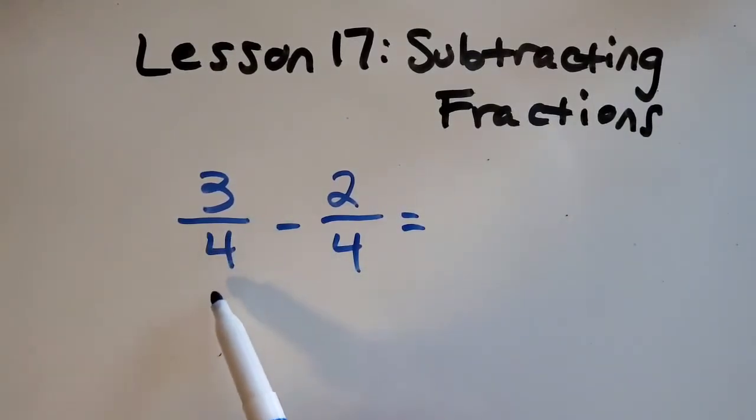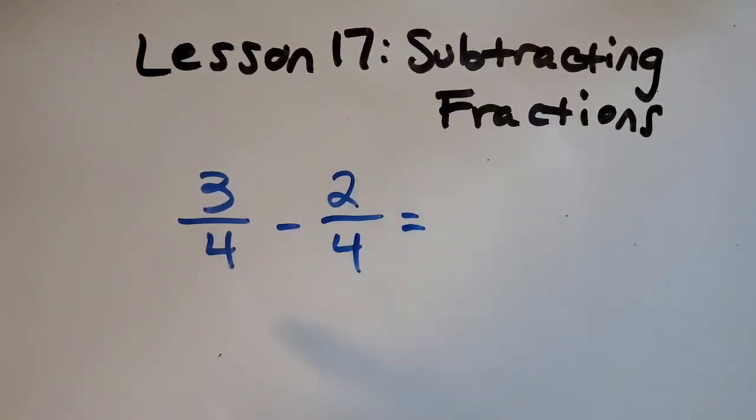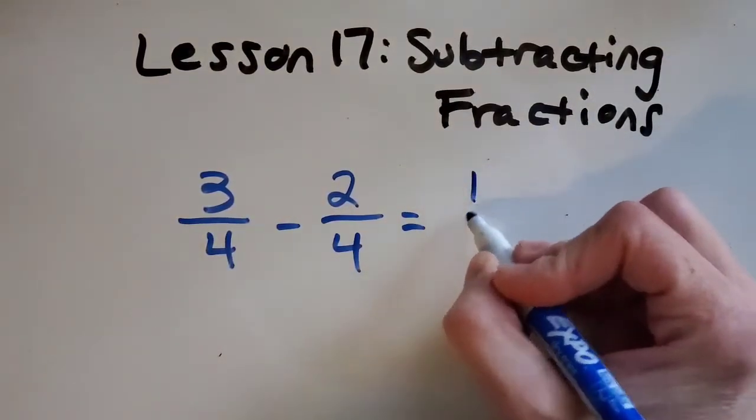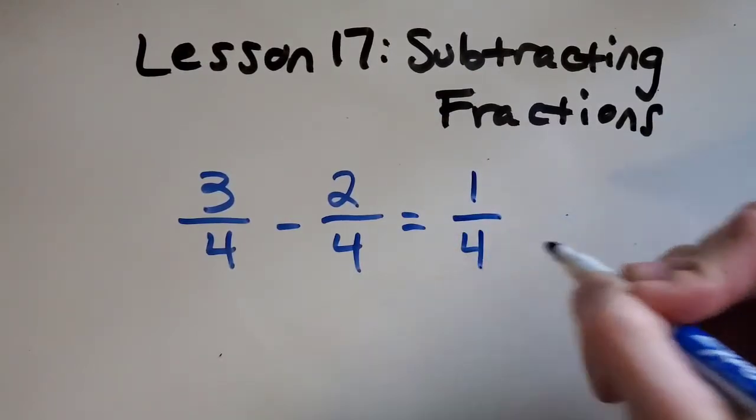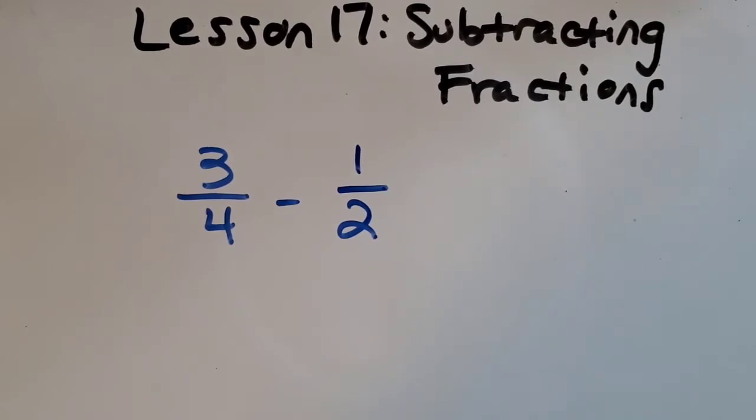So in my last video on adding fractions we learned that when the denominators are the same it's so easy. All you do is subtract the numerators or add the numerator. So in this case 3 minus 2 is 1 and so that was easy. We didn't have to find a common denominator but in the last video we learned how to find a common denominator. If you'd like to go back and look at that video it will help you with this one. But I'll also be going over the process in this video as well.